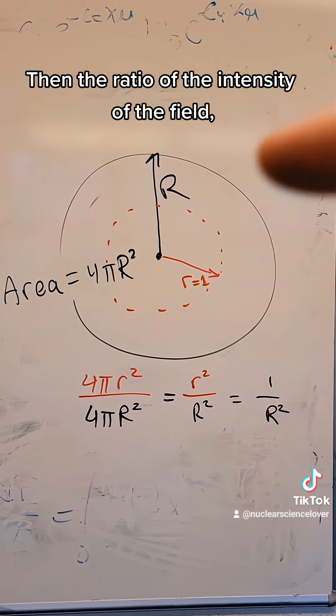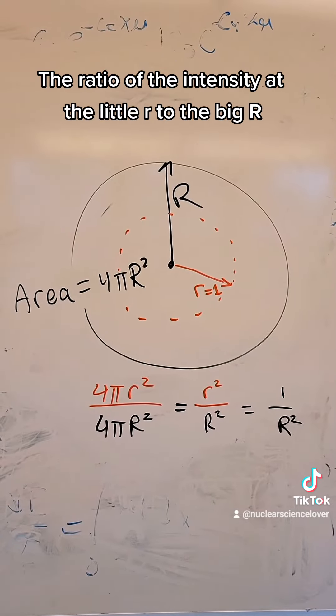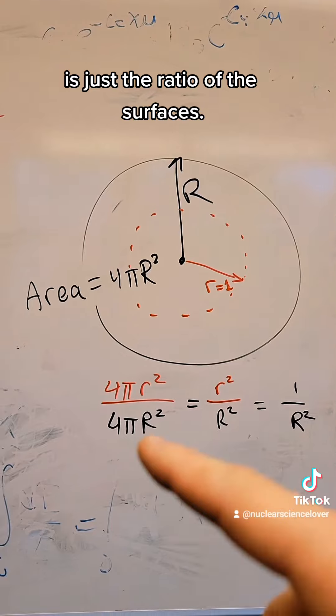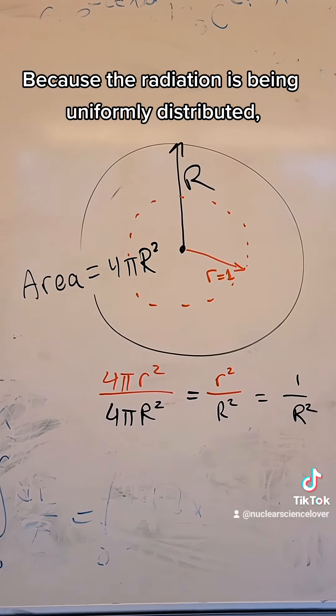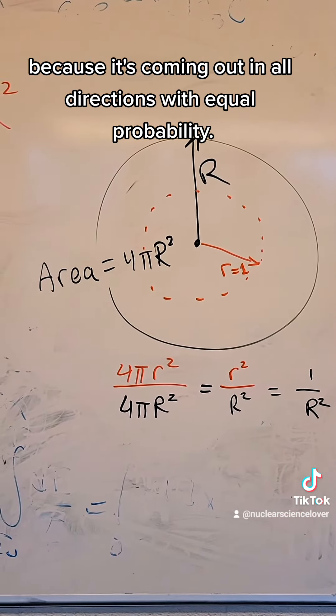then the ratio of the intensity of the field, this is radiation coming out from that point source uniformly, the ratio of the intensity at the little r to the big R is just the ratio of the surfaces, because the radiation is being uniformly distributed over that spherical source, because it's coming out in all directions with equal probability.